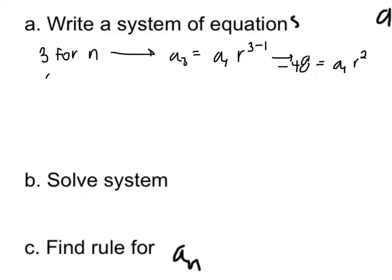Now we're going to substitute 6 for n in our second equation. So we have a sub 6 equals a sub 1 times r to the 6 minus 1, and we get 3072 equals a sub 1 r to the 5th.